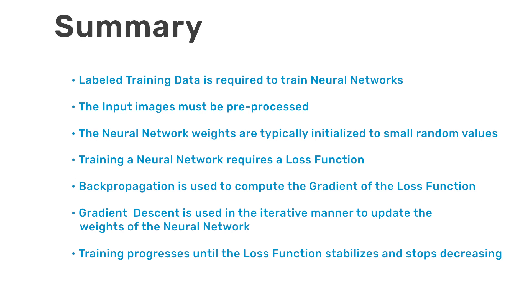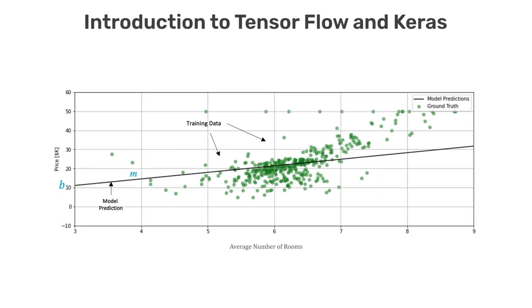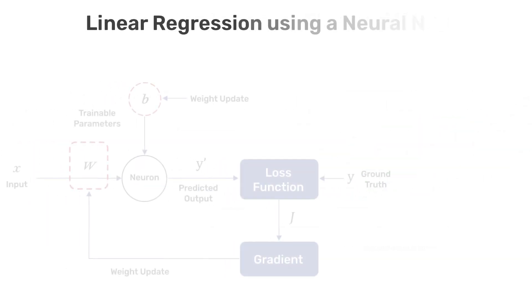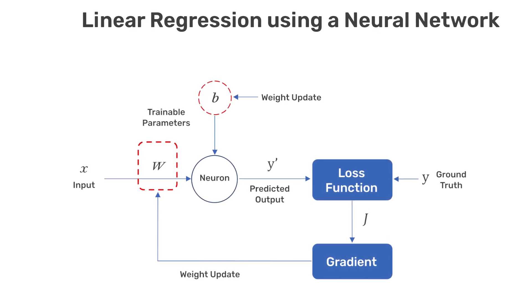So that concludes the introduction for how to train a simple neural network for image classification. And in the next video, we're going to dive into a coding example and show you how you can use TensorFlow and Keras to solve a linear regression problem using a neural network.